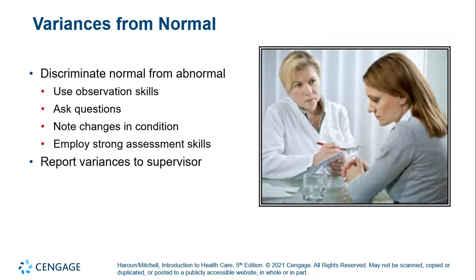Part of that information gathered is something called a variance from normal. This is especially useful when you are familiar with a patient because you can discriminate normal from abnormal. You may note a change in mental status, or notice a change in hygiene or appearance. This is very important because it could indicate a problem with an individual's health or social supports. All of this is important to report to your supervisor.